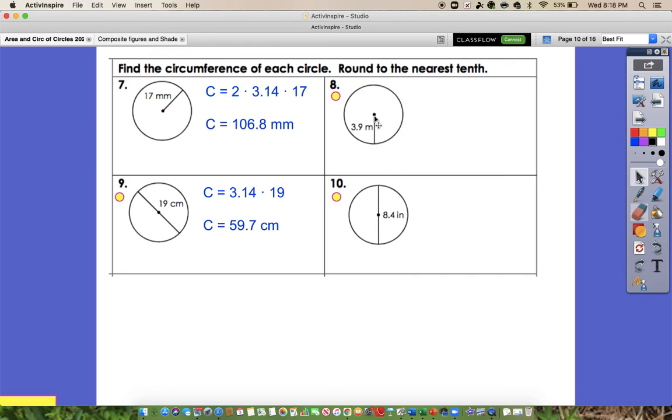Okay, for number 8 we were given the radius again, so we need to use 2 pi r as our formula. So 2 times 3.14 times 3.9, and that would give us 24.5 meters for our circumference. If you got that, you are correct. And that's of course after we've rounded to the tenths place. For all of these, we're rounding to the nearest tenth.